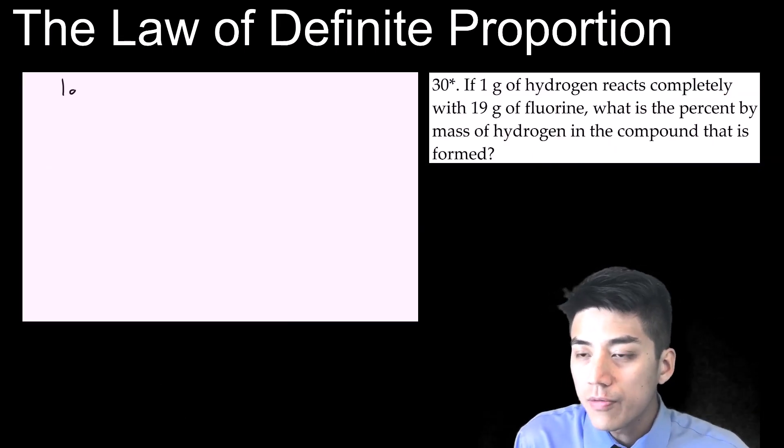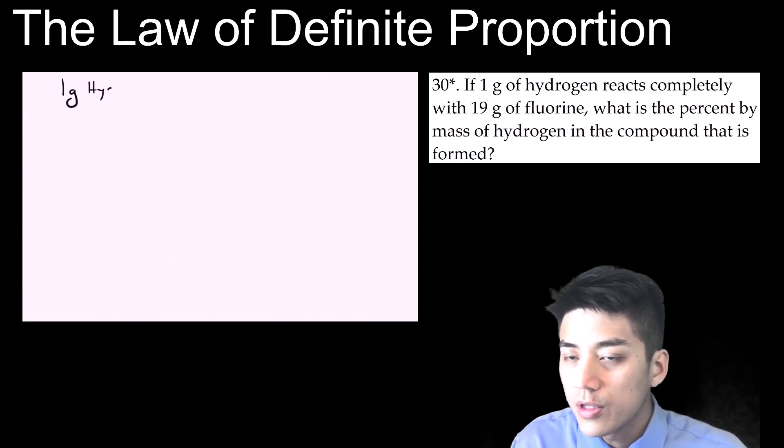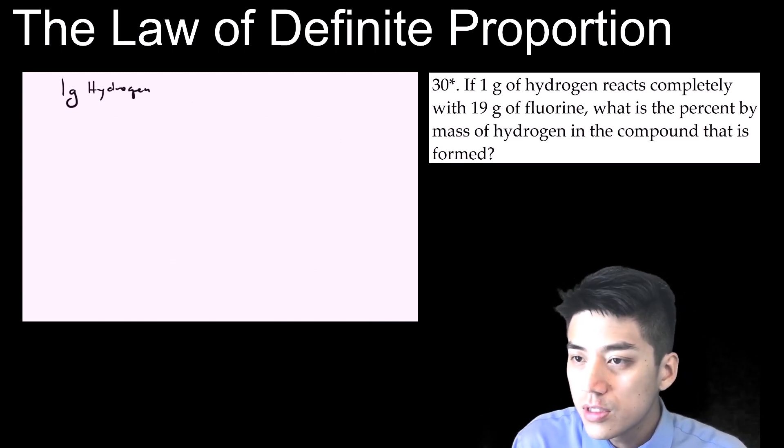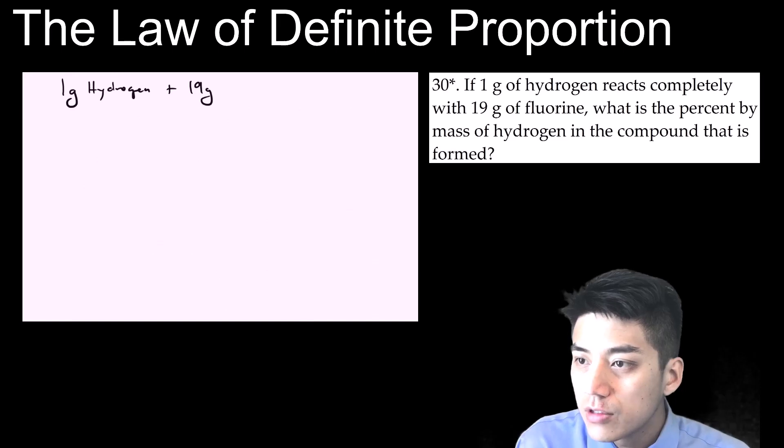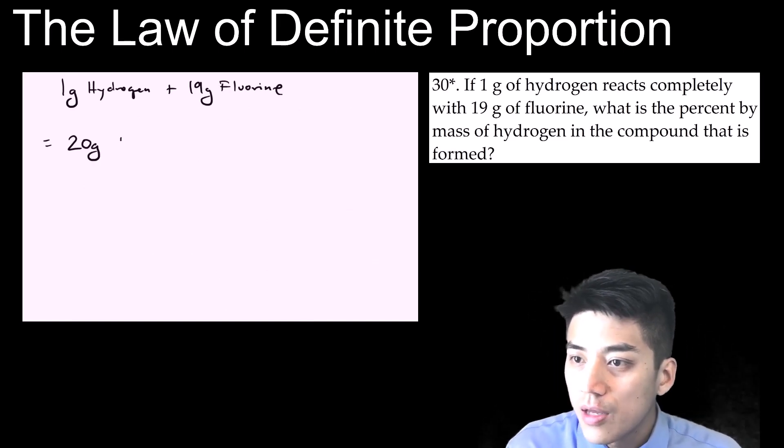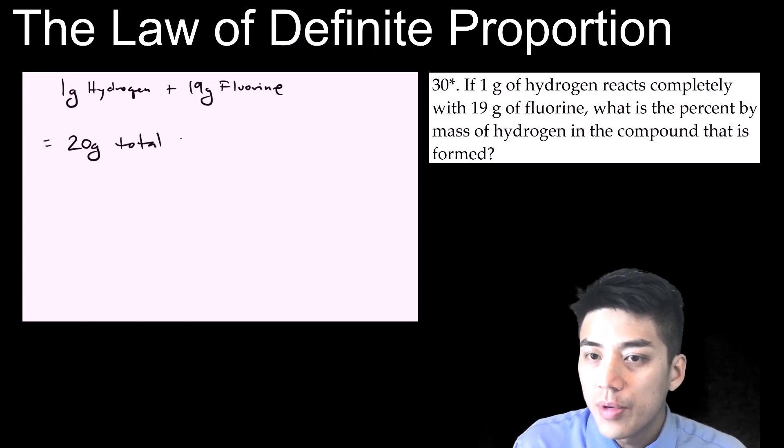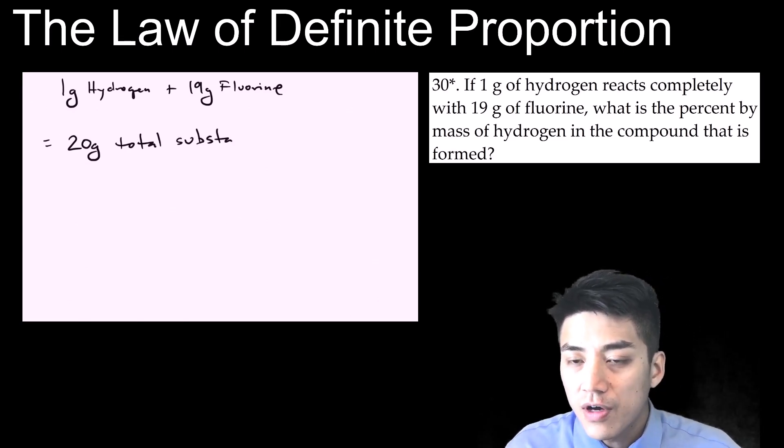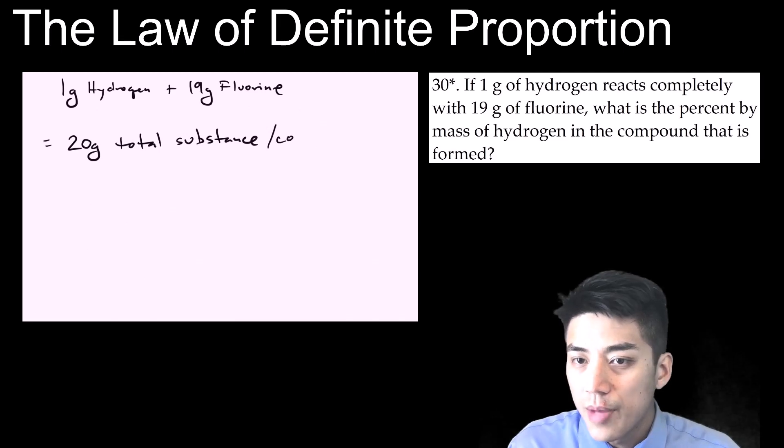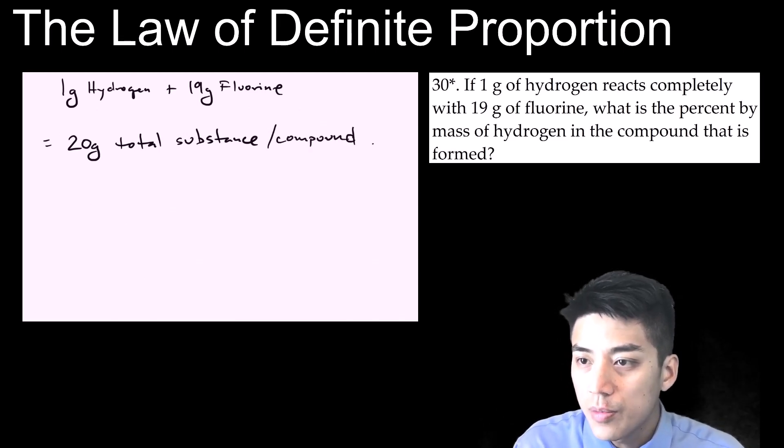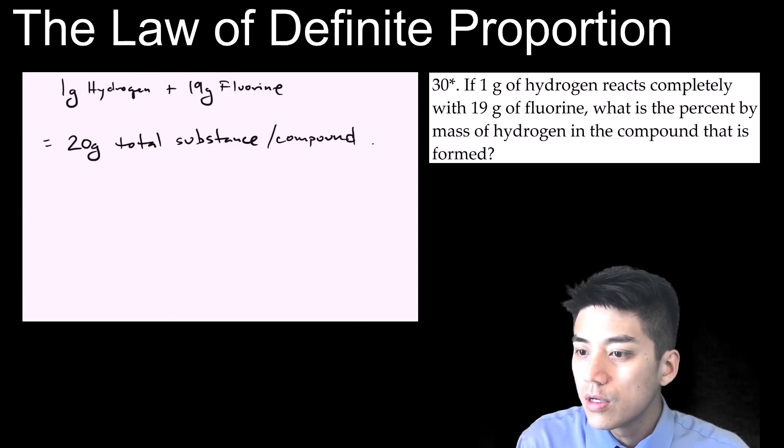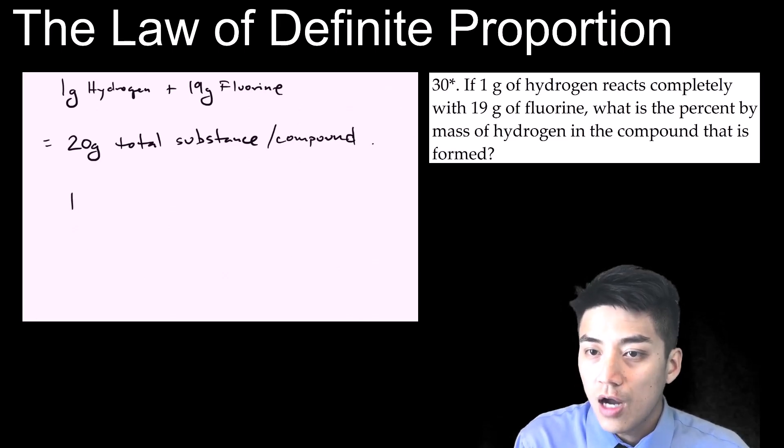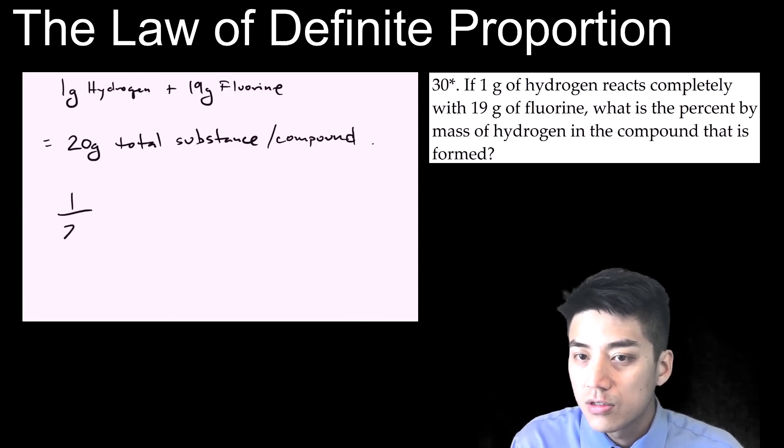I want to do problem 30 from your notes, which touches up on this idea of definite proportions. So you have 1 gram of hydrogen reacting with 19 grams of fluorine. The problem will ask, what is the percent by mass of hydrogen in the compound that's formed? So first, I find my total. The total mass of this substance is 20 grams for the whole entire compound. Because they want to know just the percent of hydrogen, the percent by mass of hydrogen, I would go 1 divided by 20, and I get 5%. So this compound is comprised of 5% hydrogen by mass.